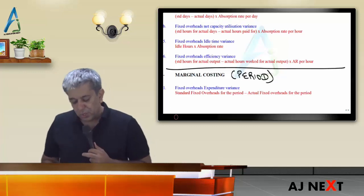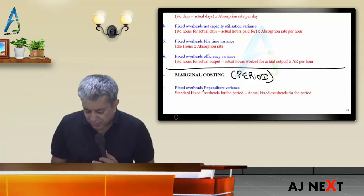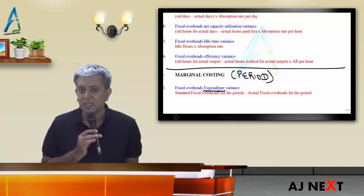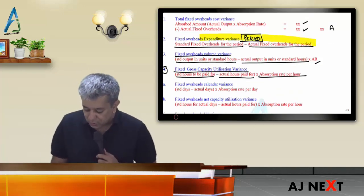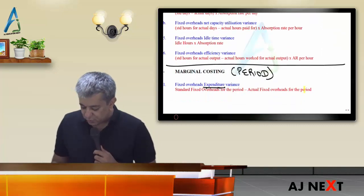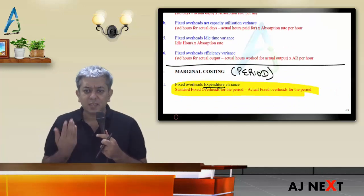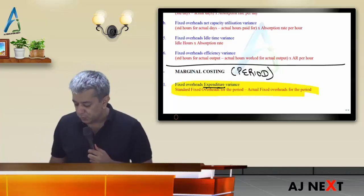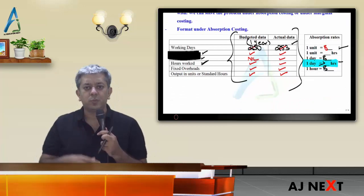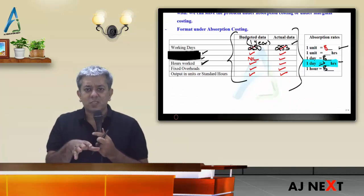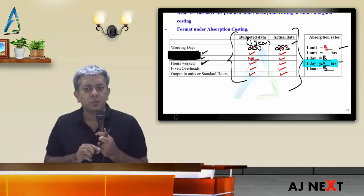Under marginal costing, since fixed overheads are period-dependent, you only ask: what should the fixed overhead expenditure be for this period, and what did it actually come to? So only one variance comes — the expenditure variance — nothing else. Remember, under absorption costing many variances come, but under marginal costing only one. Given a choice, marginal costing is easier, but in most exam questions you will have to follow absorption costing. If so much data is given in a question and they say nothing, you are supposed to follow absorption costing — they wouldn't give you all that data for nothing.